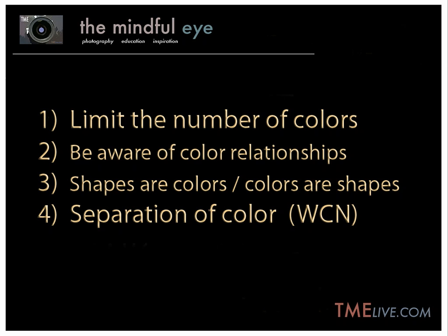There are billions of colors and all kinds of color relationships possible. Here are some things to help keep color under control: limit the number of colors, be aware of color relationships, remember that shapes are colors and colors are shapes, and think about separation of color. Another really powerful thing about Chuck's image is that even though he has a lot of color ideas, they're showing up in a very simple way in terms of shapes — bands of color moving through the image, playing off each other.